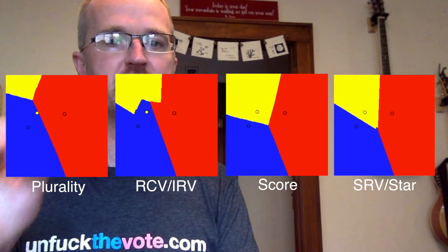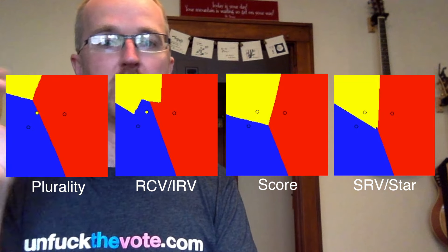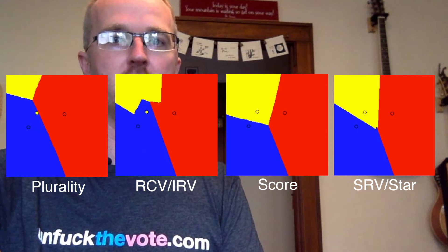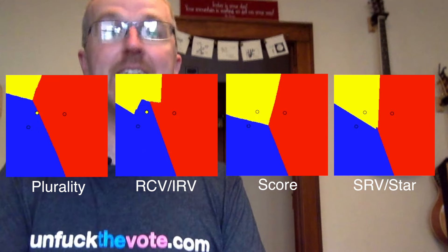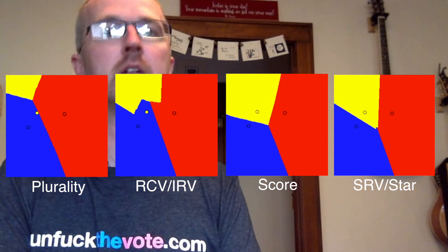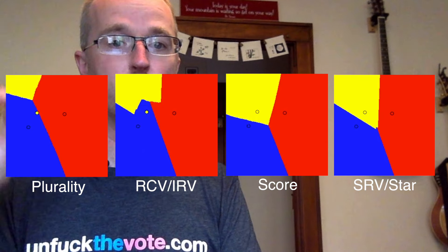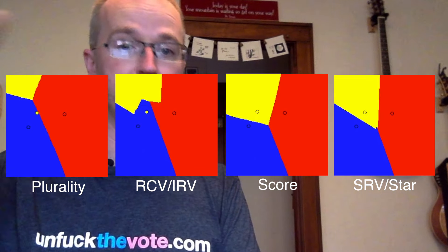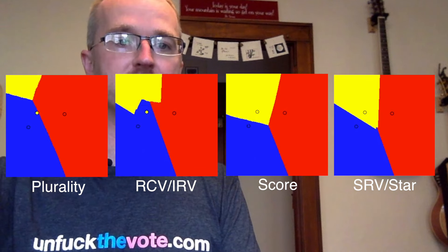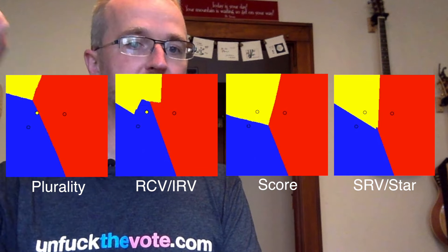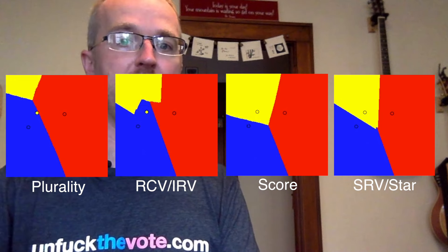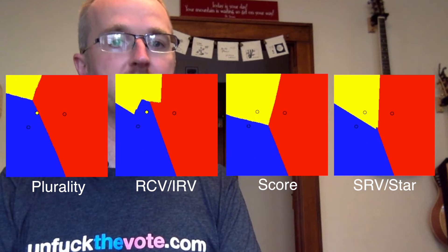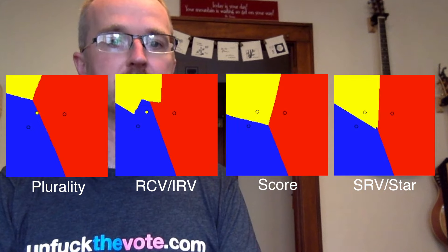This is a very visual way to demonstrate what's known as the spoiler effect, where the presence of a spoiler candidate in the race can prevent the candidate who otherwise should have won from winning. So you can see that when the electorate is closer to yellow on the blue side of the red-blue divide, red acts as a spoiler. And when the electorate is closer to yellow on the red side, blue acts as a spoiler. In both cases, preventing the most representative candidate from winning.